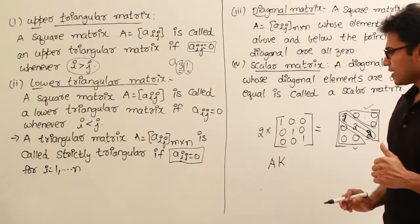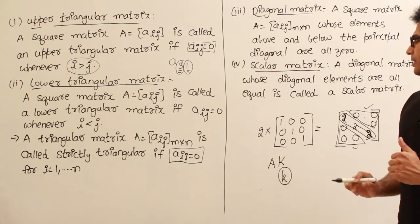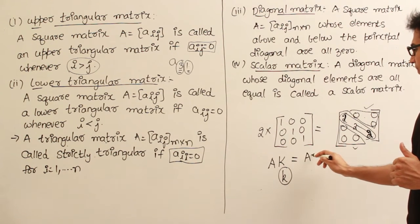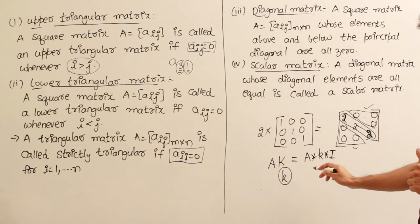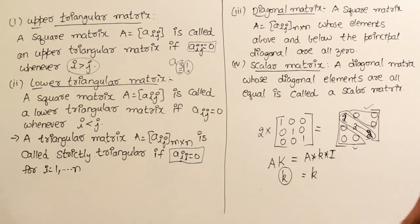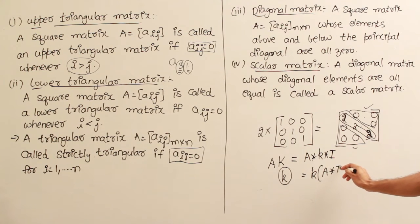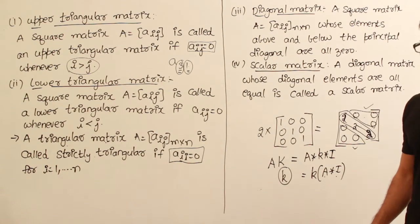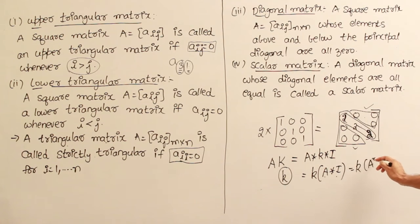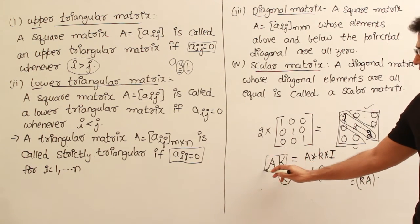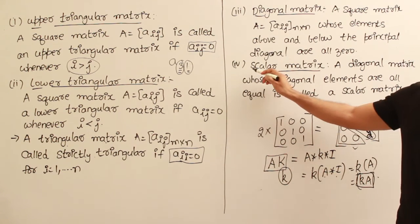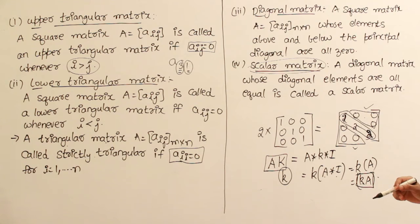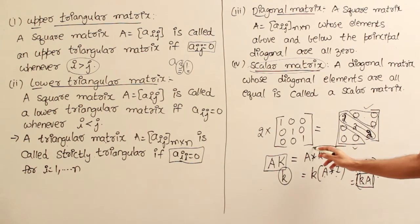If I have a matrix A and K is a scalar matrix in which all diagonal elements are k, then I can write this as A times k times I, where I is the identity matrix. Pulling out k, I can write it as k times (A times I), and since A times I equals A, this equals kA. Therefore, multiplying a matrix with a scalar matrix is also multiplying that matrix with a scalar value — that is called scalar multiplication. That is why the name scalar matrix has been derived.